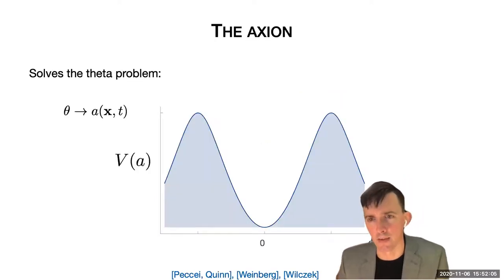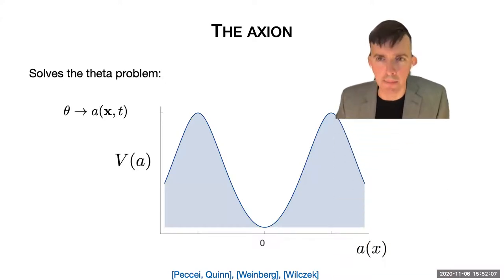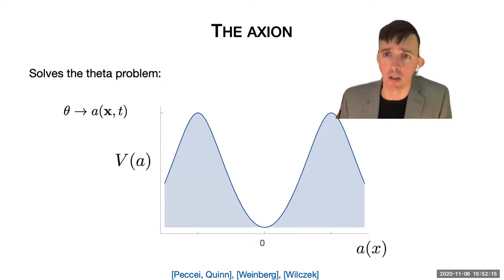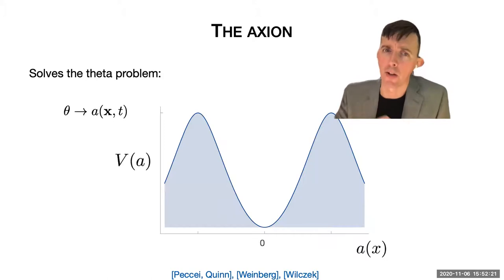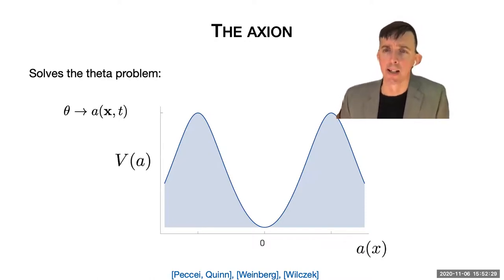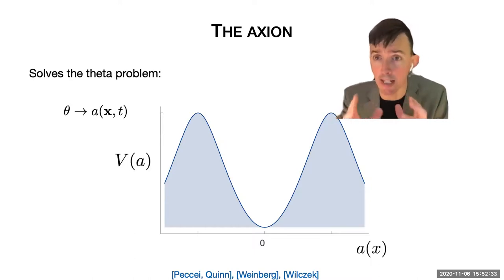The axion is a hypothetical particle first conceived in the late 1970s by Weinberg and Wilczek following a proposal by Peccei and Quinn. And it provides a very attractive solution both to the problem of the theta angle and to the nature of dark matter. In its essence, the axion makes the theta angle of the standard model into a dynamical field.